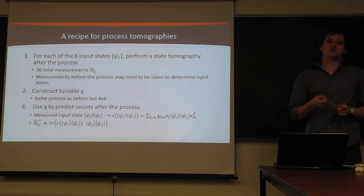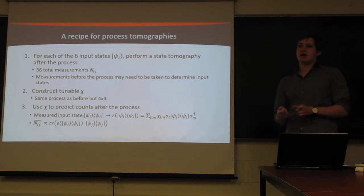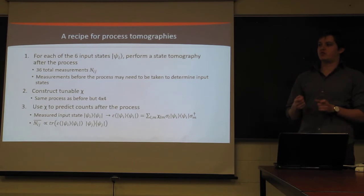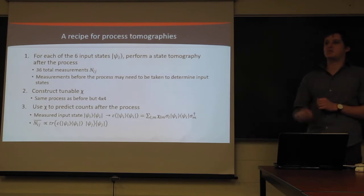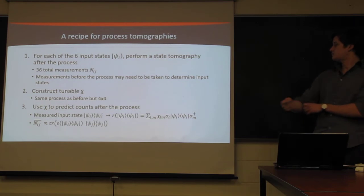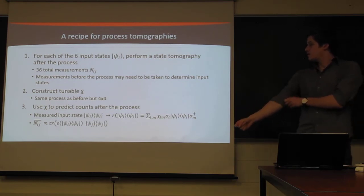Then we're going to take this chi matrix and use it as sort of a dummy process. We're going to take each of our six input states and we're going to apply the dummy process to it. And then we're going to perform projections, all of each of the projections that we would normally do in our tomography, which will give us again, 36 sort of dummy projectors, dummy count numbers.